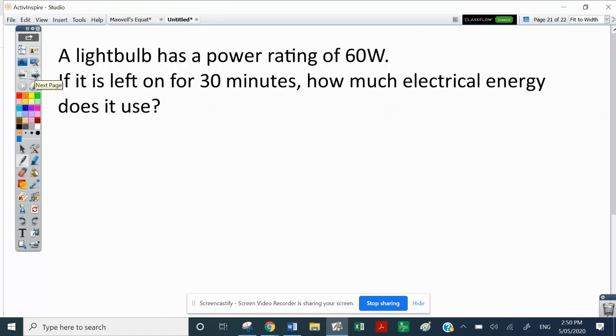A light bulb has a power rating of 60 watts and it's left on for 30 minutes. How much electrical energy does it use? So going back to our formula, power is equal to the change in energy all over T. So far, we've had change E, delta E here as delta K or delta U. That's potential and gravitational energy. So gravitational potential energy or kinetic energy. It can be any form of energy. So in this case, we could use electrical energy.